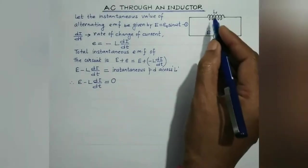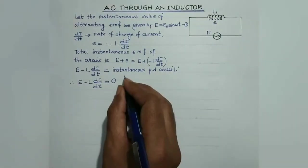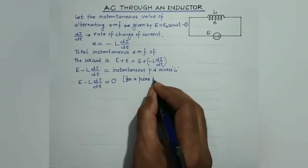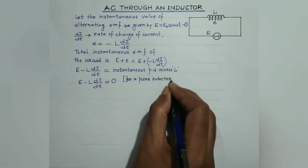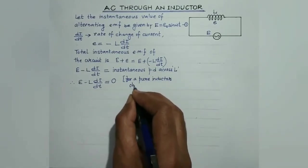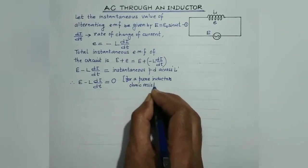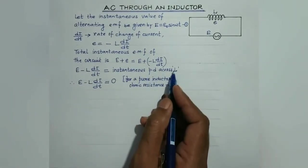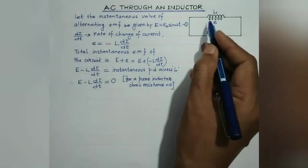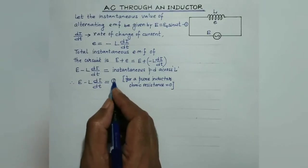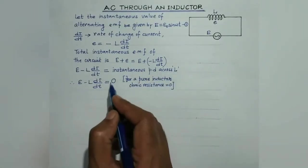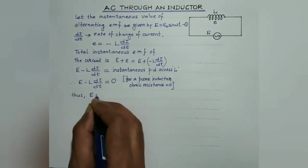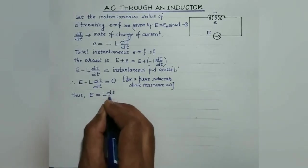It is zero because we have considered this to be a pure inductor, and a pure inductor does not offer any ohmic resistance. The potential difference across L would be I into R, and since ohmic resistance for a pure inductor is zero, that PD is zero. Therefore, on rearranging, we get E equals L dI/dt.